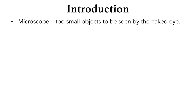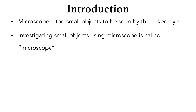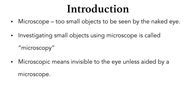A microscope is an instrument used to see objects that are too small to be seen by the unaided or naked eye. The science of investigating small objects using the microscope is called microscopy, and microscopic means invisible to the eye unless aided by a microscope.